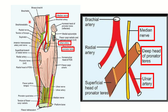Here we can see the brachial artery, which divides into the ulnar artery and the radial artery. In the first picture, the brachial artery terminates into the radial artery and the ulnar artery. We can see the median nerve, which is very close. In the cubital fossa, it is separated by a muscle.